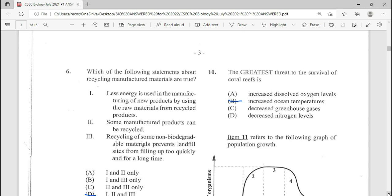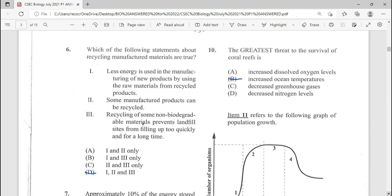Six, which of the following statement about recycling manufactured material are true? One, less energy is used in manufacturing new products by using the raw material from recycled products. Two, some manufactured products can be recycled. Three, recycling of some non-biodegradable material prevents landfill site from filling up too quickly and for a long time. That's going to be D for number six.